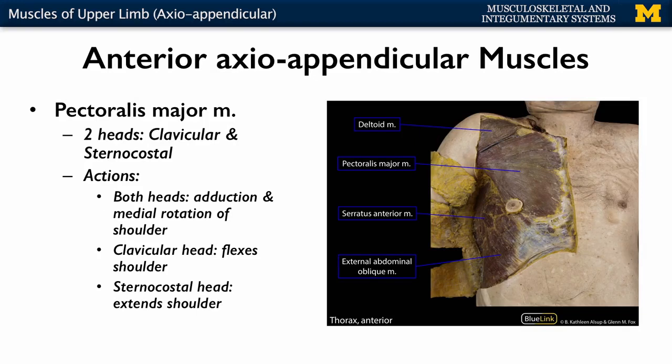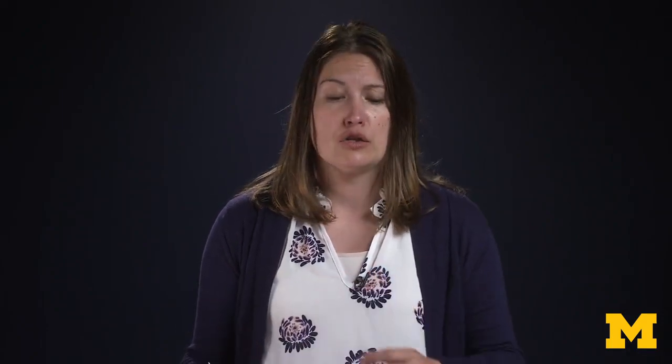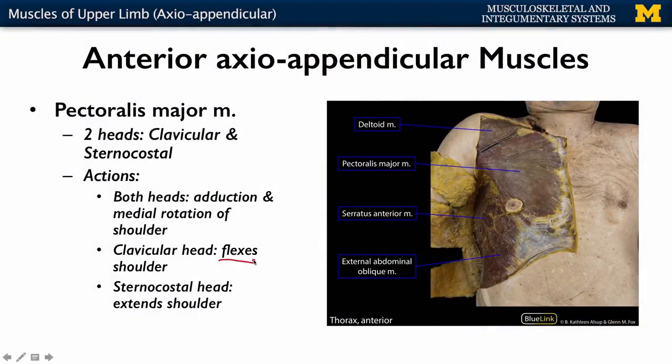Pectoralis major is going to have two different heads associated with it. You're going to have a clavicular head and a sternocostal head, so attached to the sternum and the costal cartilages. Both heads when contracting are going to be very important in terms of adduction, or bringing the shoulder joint back to anatomical position, as well as medial rotation of the shoulder. They can contract individually and will actually be antagonists to one another — the clavicular head is going to flex whereas the sternocostal head can extend. Not all muscles can do opposite motions, but these, since there are two different heads, can.